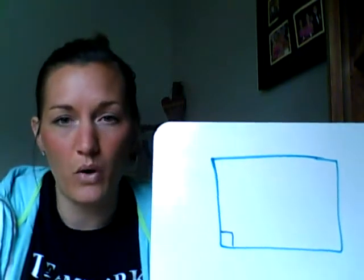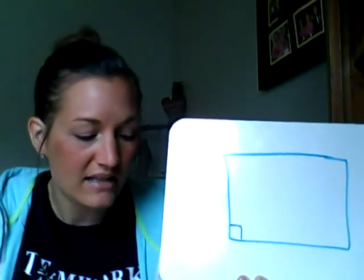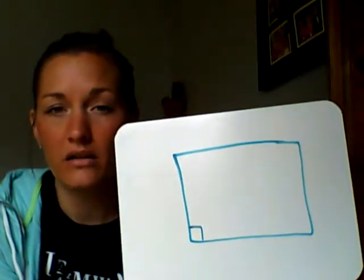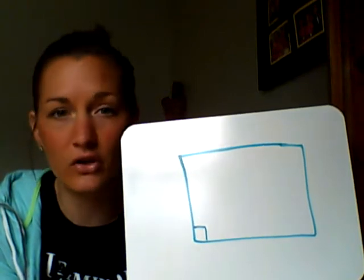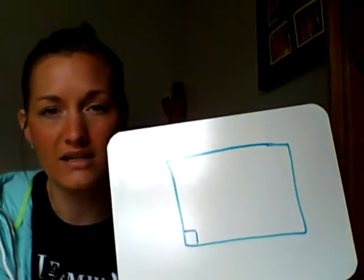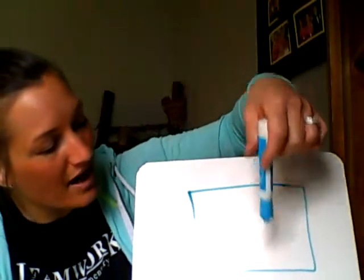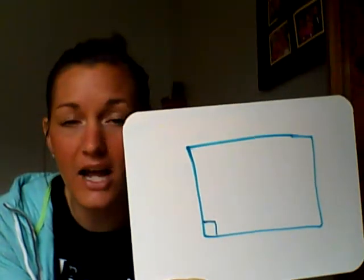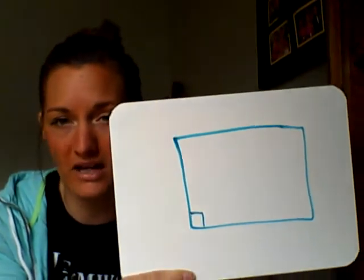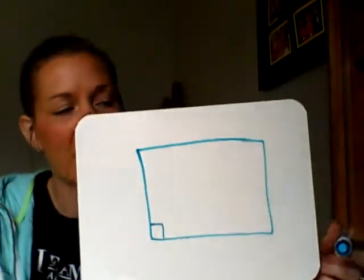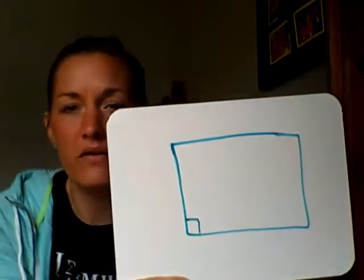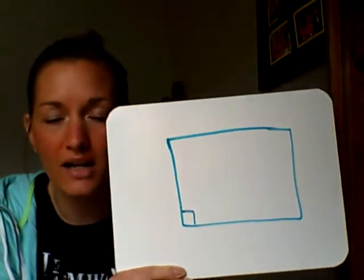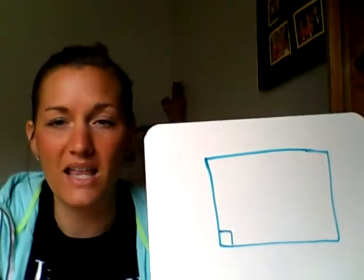Another thing you will notice with a rectangle is it has something called parallel sides. Parallel sides means that the lines will go on forever and never touch, cross, or meet. So if you look at this, if we drew the top and bottom lines on forever and ever, they would never cross. That means it is a parallel line. A rectangle actually has two sets of parallel lines — the top and the bottom, and also the sides. Both of those are parallel lines.